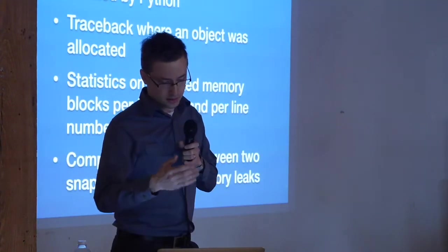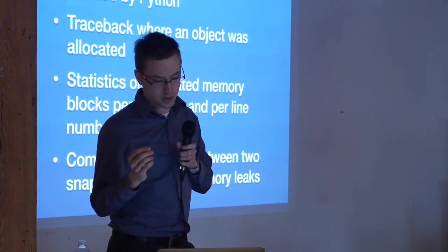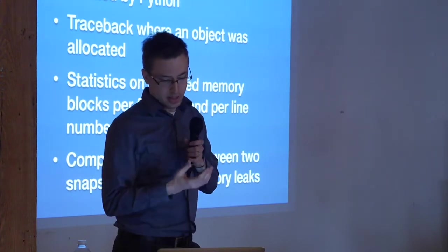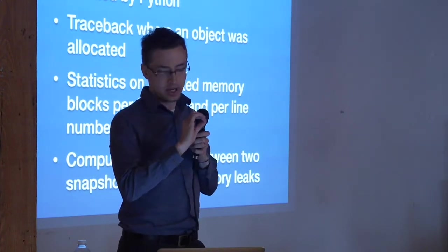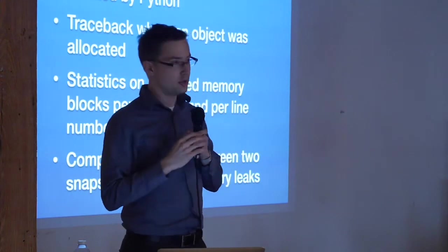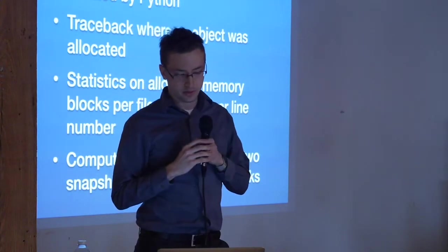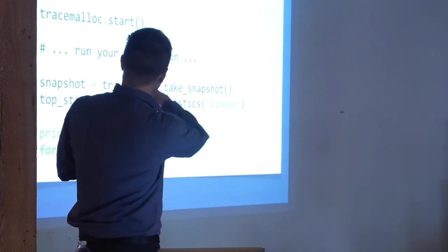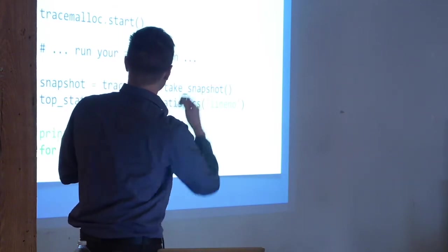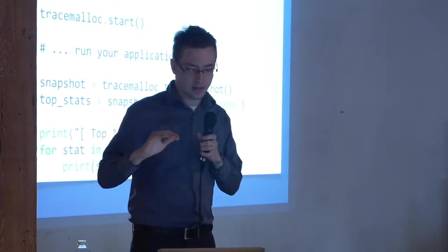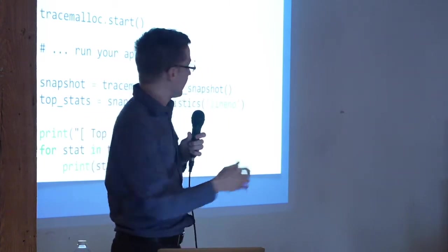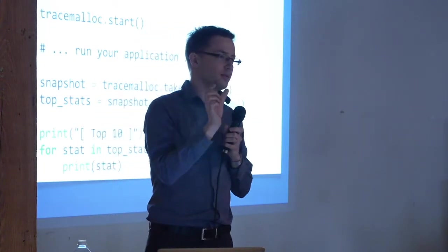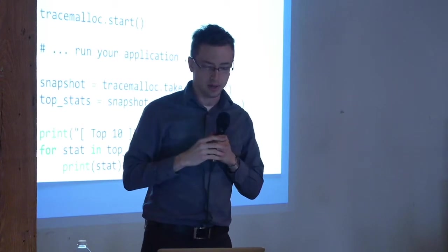Tracemalloc. This is a really useful debug tool for finding memory leaks. You can get stats on actually different files, for each file and line number in that file, you can find the memory allocations for those. And on the next slide I'll show you just a quick example. You just import tracemalloc, start it, and then run your application, and you can take snapshots whenever you want, and then print out those stats. In this case, you're just printing out the top 10, but you would see for each specific line the top memory usage.